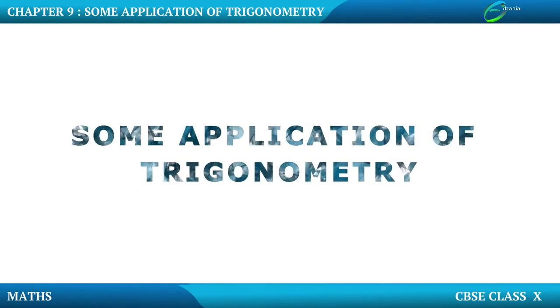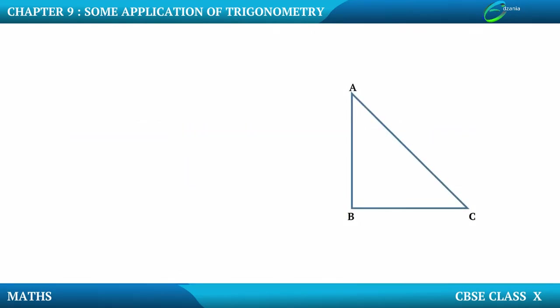Chapter 9: Some Applications of Trigonometry. In this chapter we are going to see applications of Trigonometry. Here is a right angle triangle, and we know that Trigonometry is applicable only in right angle triangles. Let us begin with the trigonometric ratios that we have studied in chapter 8 as well.